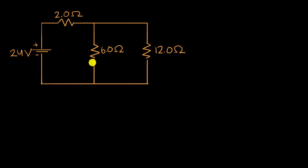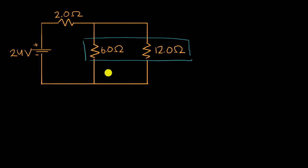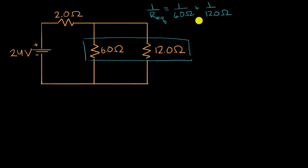The way I am going to tackle it is to first simplify the circuit — take these two resistors in parallel and think about what the equivalent resistance would be. We have seen that before: one over the equivalent resistance is going to be equal to one over 6.0 ohms plus one over 12.0 ohms. One sixth is the same thing as two over 12, so two twelfths plus one twelfth is three twelfths.